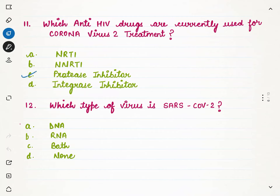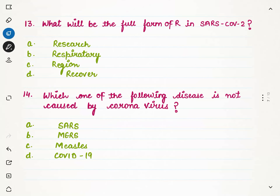The next question: which type of coronavirus is SARS-CoV-2 — DNA, RNA, both, or none of these? It is an RNA virus. The full form of RNA is ribonucleic acid. So option B is the correct option. The next question: what is the full form of R in SARS-CoV-2? We already told you — Severe Acute Respiratory Syndrome — so R stands for Respiratory. The correct option is Respiratory.